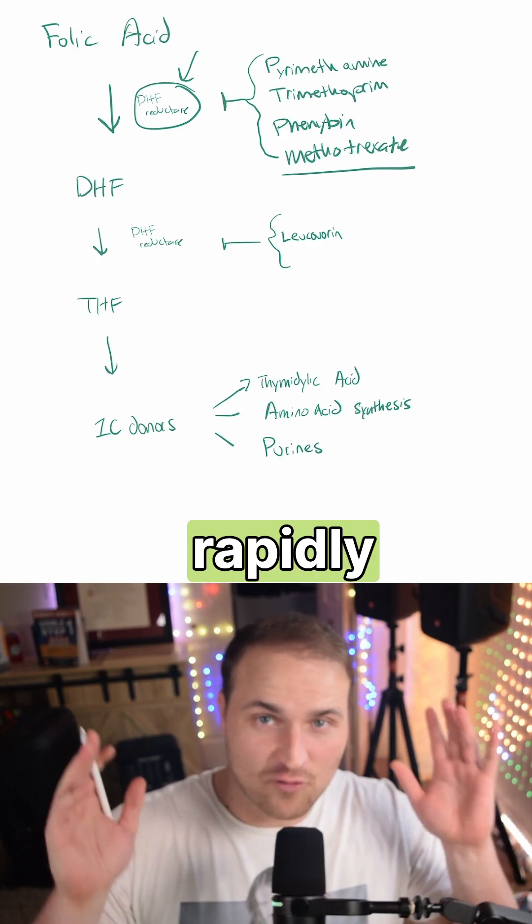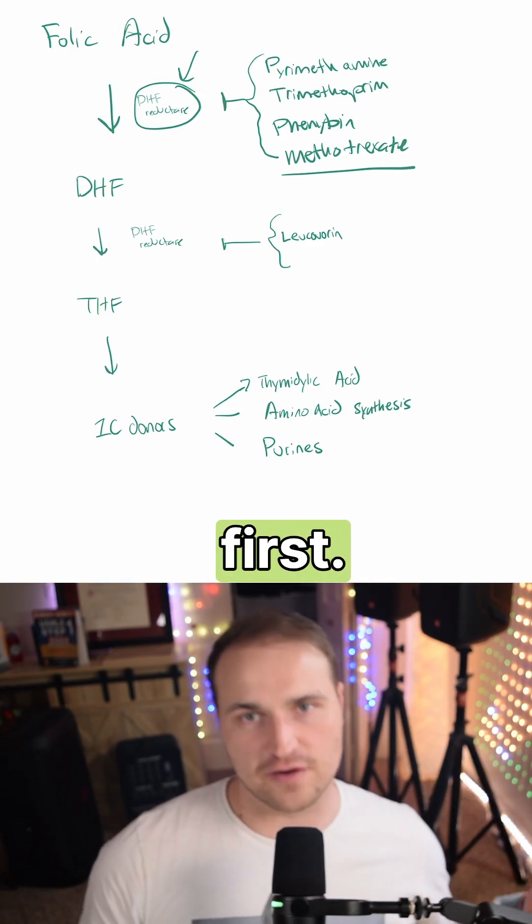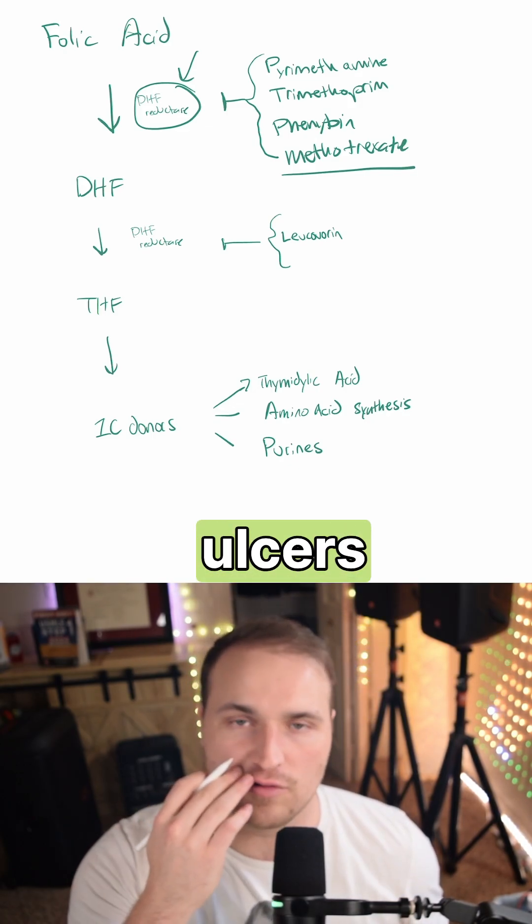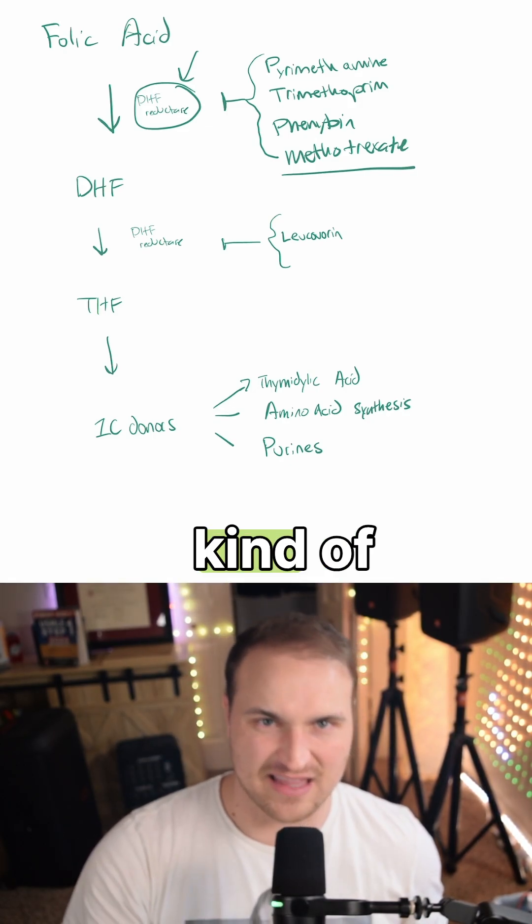And so synthesis stops and rapidly dividing tissues are going to be injured first. And that's why it's the oral and the GI mucosa. She's going to get painful mouth ulcers and also bone marrow pancytopenia, that kind of stuff.